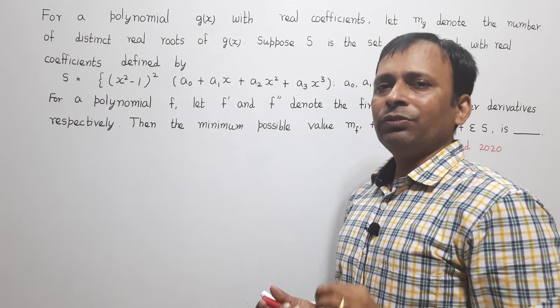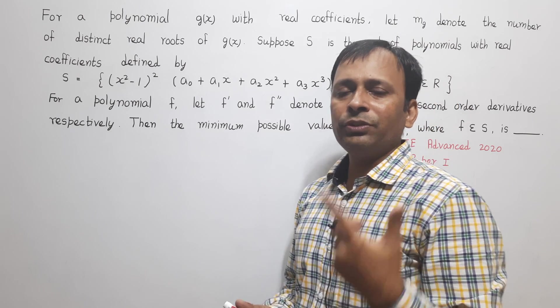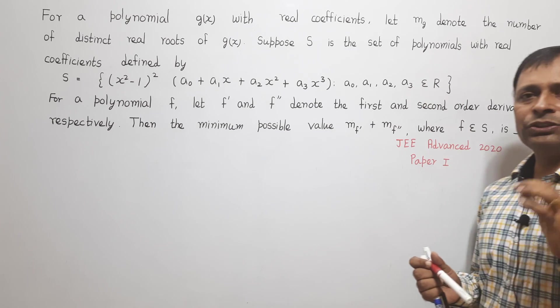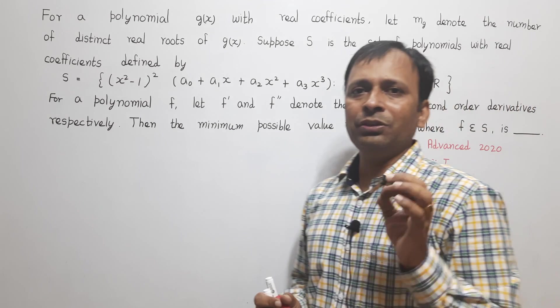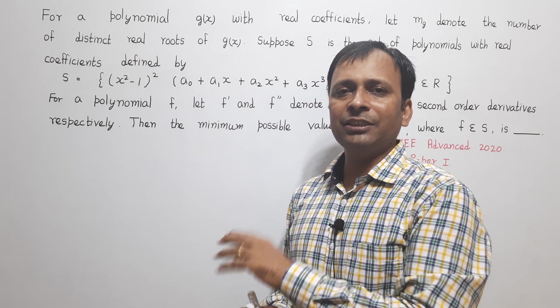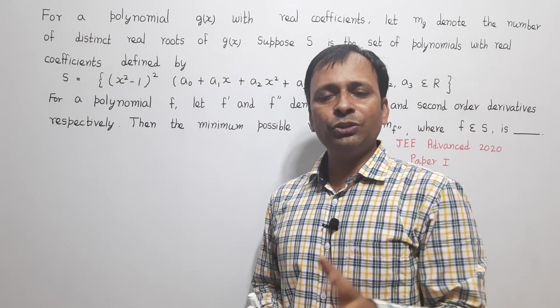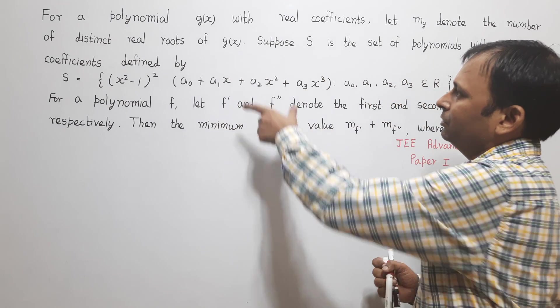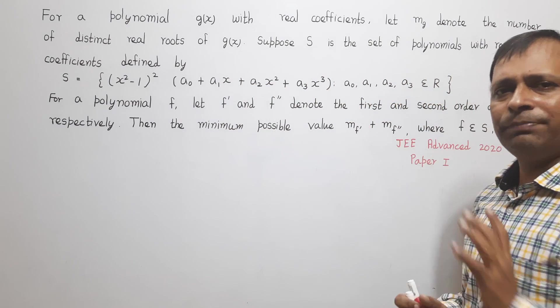The question could have been much more interesting had it said that a₃ is not equal to 0. Now because there is no restriction on a₀, a₁, a₂, a₃ other than these are real numbers, they can be 0 also. So this need not be a cubic polynomial, this need not be a quadratic polynomial, it can be anything.